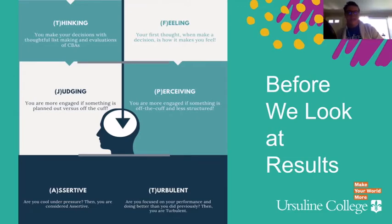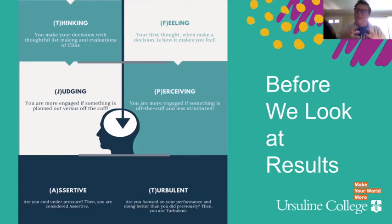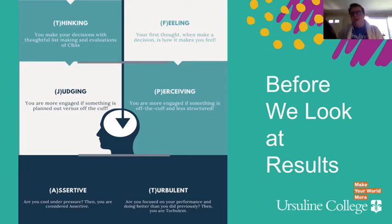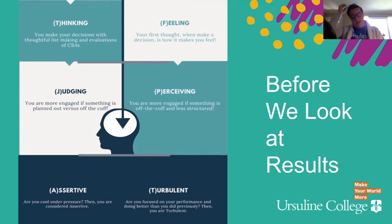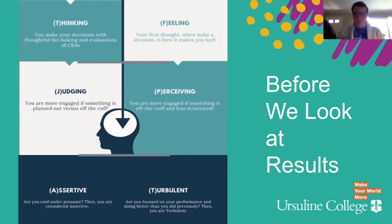Something unique about the 16 personalities is that they also include assertive versus turbulent. This is about your temperament — how you handle pressure or when your personality gets challenged. Assertive people are pretty cool and collected under pressure — they're like, 'I'm cool, this is good, here we are.' Turbulent people are thinking through how best they could have applied their personality to a situation under pressure — thinking, 'I should have done this better.' It's a strong alphabet soup, but it really helps you when you get to know yourself a little bit more.